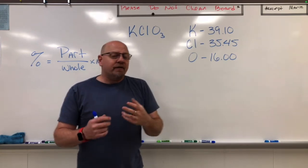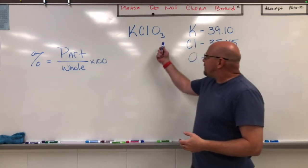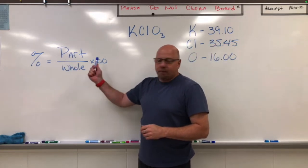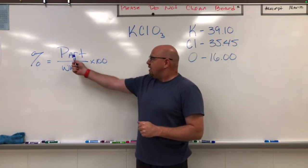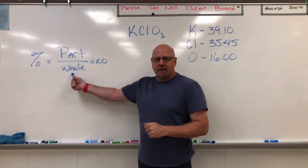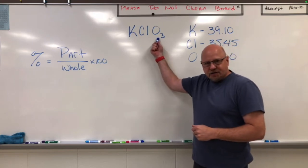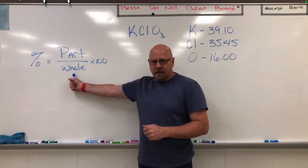Now if we want to find a percentage by mass of oxygen in this compound, we need to basically use a simple percentage calculation which is the part divided by the whole. In this case we need to know the part, the oxygen, based on what the whole mass is.